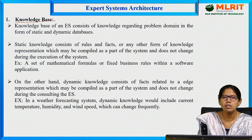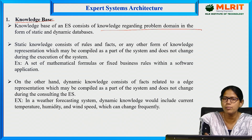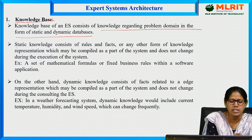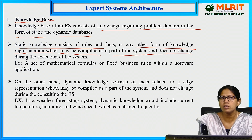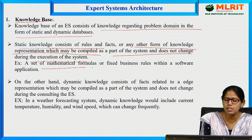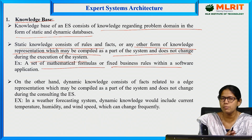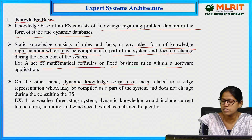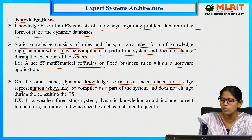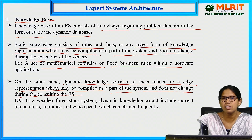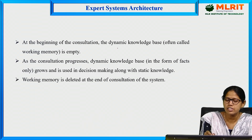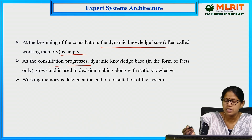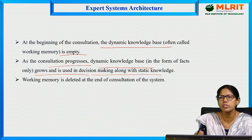The knowledge base of an expert system consists of knowledge regarding the problem domain in the form of static and dynamic databases. Static knowledge consists of rules and facts or other forms of knowledge representation which are compiled as part of the system and do not change during execution — that is fixed. Dynamic knowledge, for example in weather forecasting, would include current temperature, humidity, and wind speed which can change frequently. At the beginning of the consultation, the dynamic knowledge base will be empty, and as the consultation progresses it grows and is used in decision making along with the static knowledge.